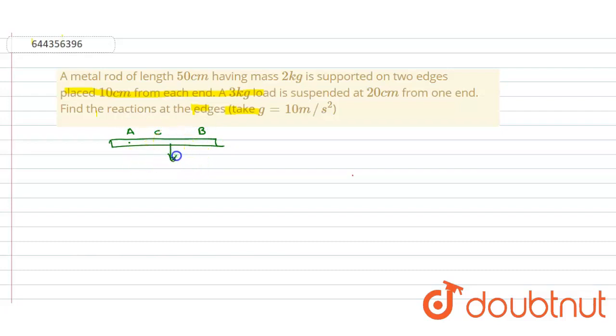And this rod is of 2 kg mass, so let this be equal to W1. So the rod length is 0.5 meters, converted from centimeters into meters. And point A is 0.1 from this end, and point B.